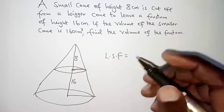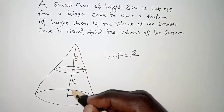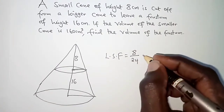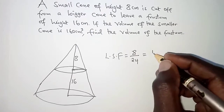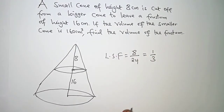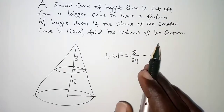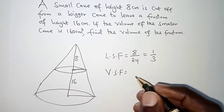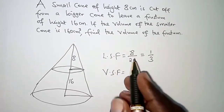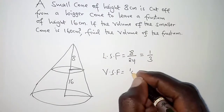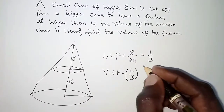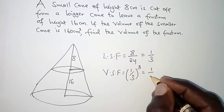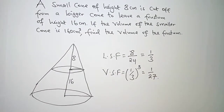The linear scale factor is the height of the smaller cone over the height of the bigger cone: 8 over 24, which simplifies to 1 over 3. With the linear scale factor, we can get the volume scale factor. The volume scale factor is obtained by cubing the linear scale factor, giving us 1 over 27.